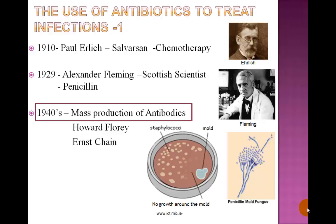As you may recall from our study of disease treatment, Paul Ehrlich in 1910 discovered salvarsan, an arsenic-based compound, to treat syphilis. The age of chemotherapy had begun.